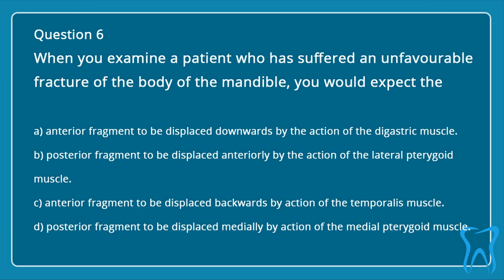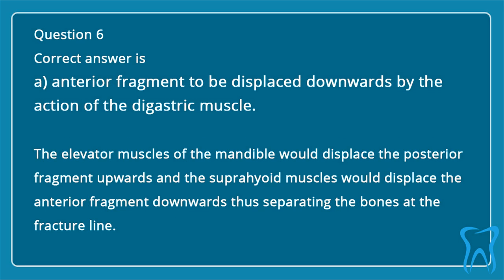Question 6. When you examine a patient who has suffered an unfavorable fracture of the body of the mandible, you would expect the: a. Anterior fragment to be displaced downwards by the action of the digastric muscle. b. Posterior fragment to be displaced anteriorly by the action of the lateral pterygoid muscle. c. Anterior fragment to be displaced backwards by action of the temporalis muscle. d. Posterior fragment to be displaced medially by action of the medial pterygoid muscle. Correct answer is a: Anterior fragment to be displaced downwards by the action of the digastric muscle. The elevator muscles of the mandible would displace the posterior fragment upwards and the suprahyoid muscles would displace the anterior fragment downwards, thus separating the bones at the fracture line.